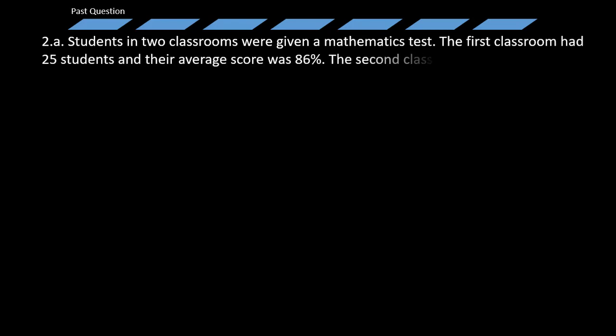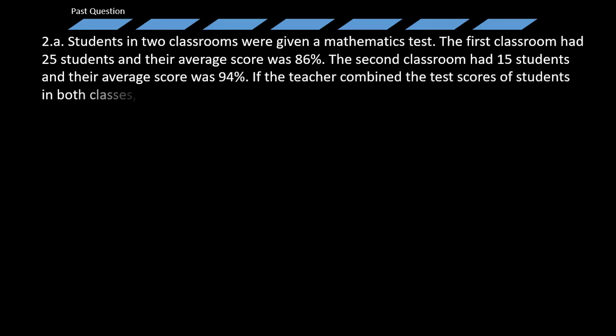Students in two classrooms were given a mathematics test. The first classroom had 25 students and their average score was 86%. The second classroom had 15 students and their average score was 94%. If the teacher combined the test scores of students in both classes, what is the average score for both classes?